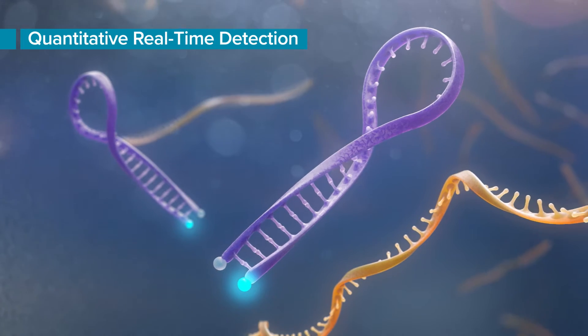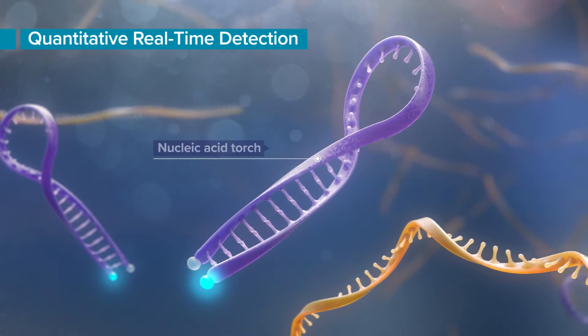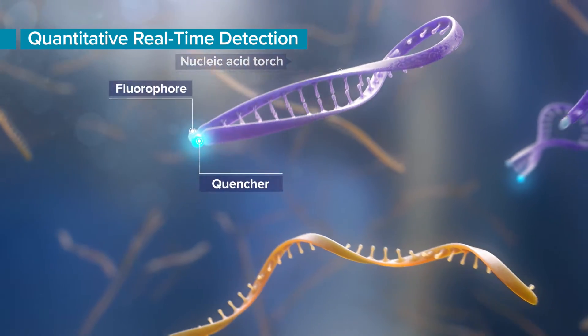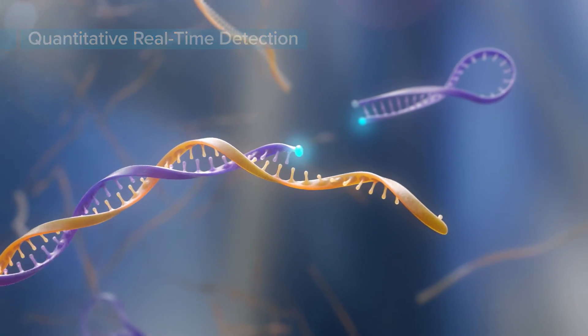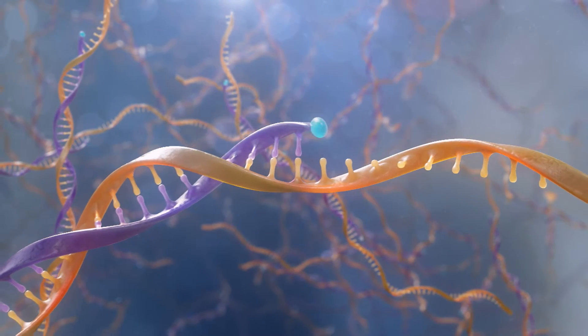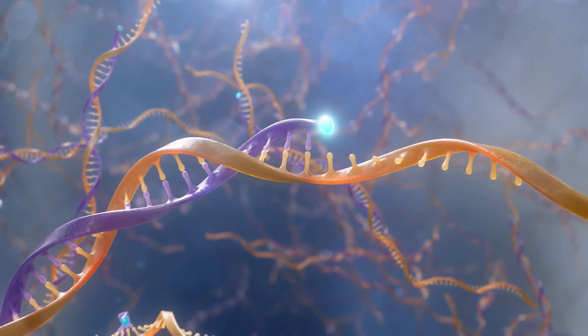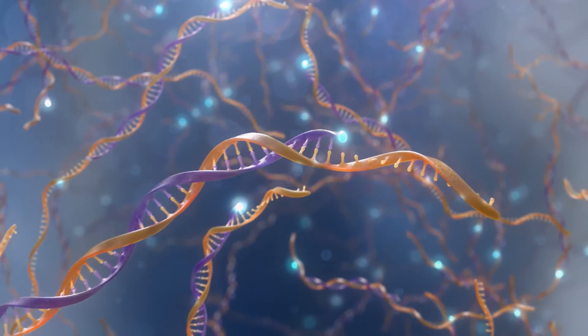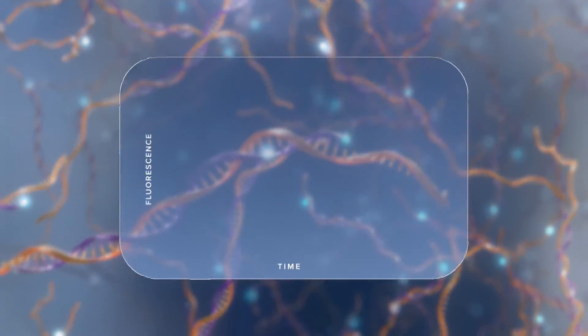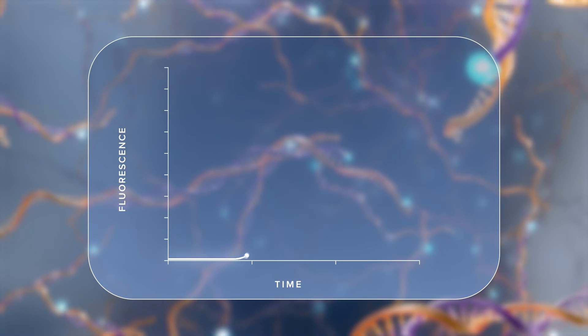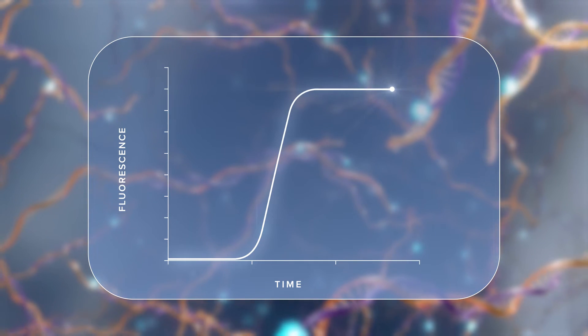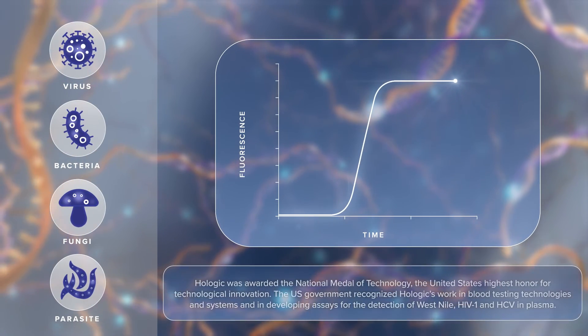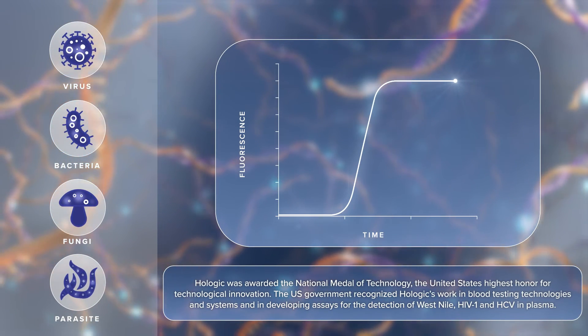In quantitative real-time TMA, single-stranded nucleic acid torches containing a fluorophore and a quencher hybridize to RNA amplicons in real-time. Separation of fluorophores and quenchers allows for fluorescence emission upon excitation by a light source, with the signal increasing respective to amplicon generation. The time taken for the fluorescent signal to reach a specified threshold is inversely proportional to the starting target concentration, allowing detection and quantification of the target.